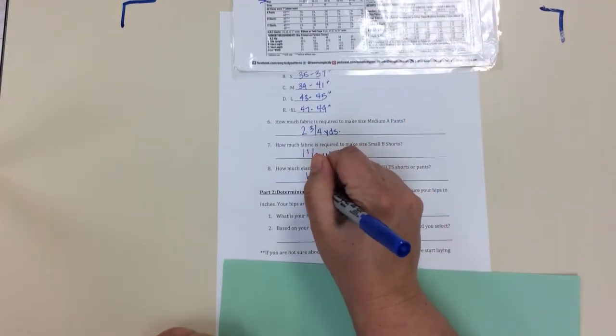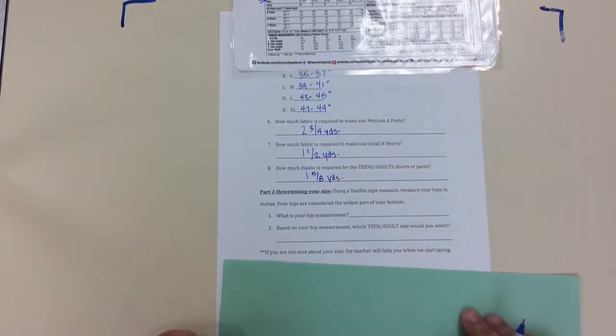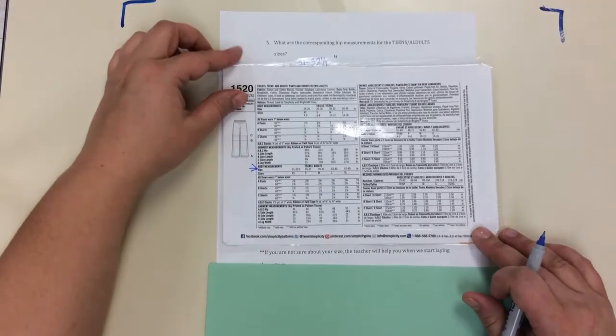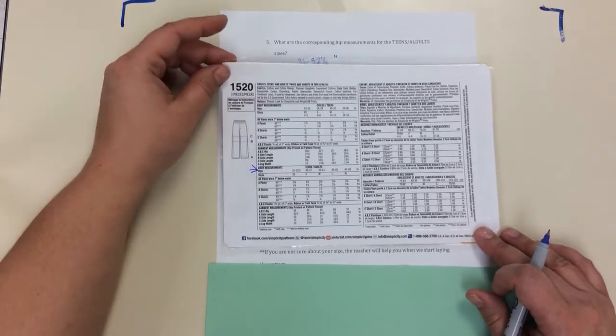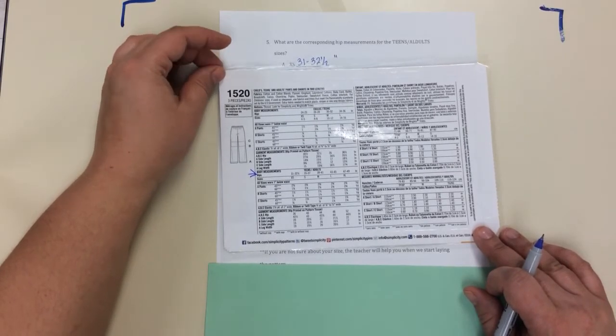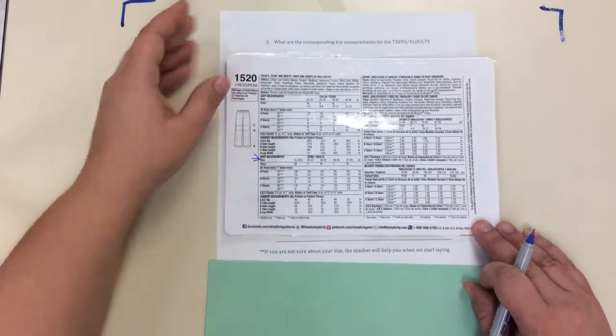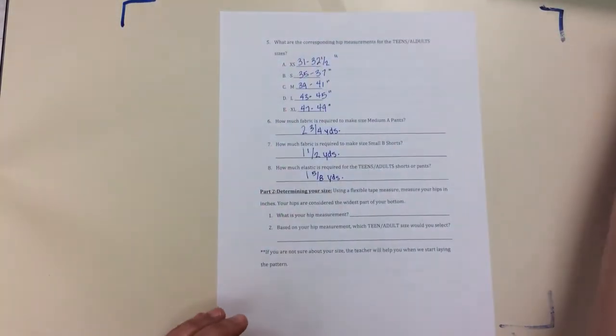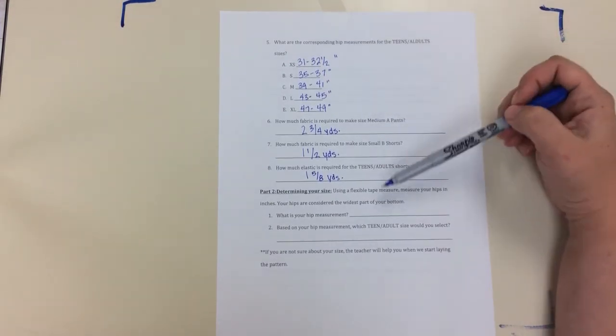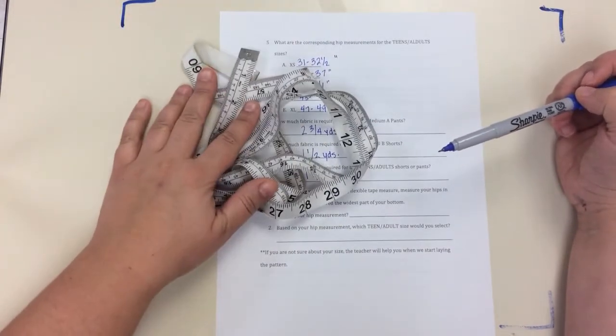Okay, now we have all the information for you to go ahead and if you're at the store, purchase your fabric. Or if you're here, measure yourself and select your fabric. So that's the next step on the worksheet. Now what we're going to use this information for is comparing it to our actual body measurements. That's why we got the measuring tape out.